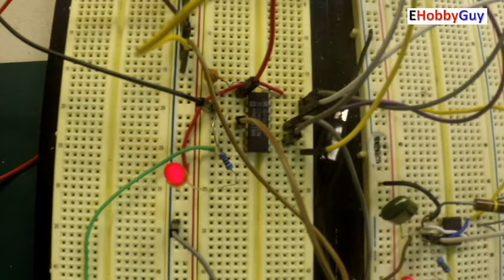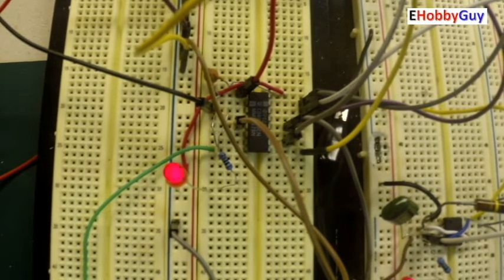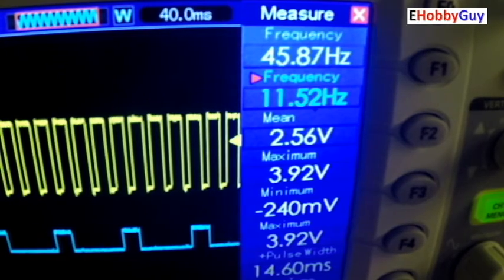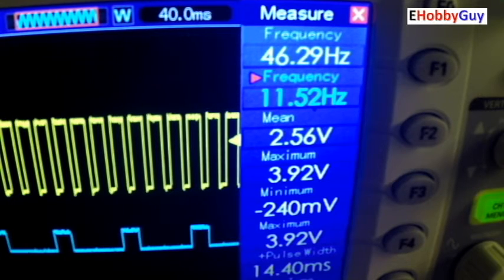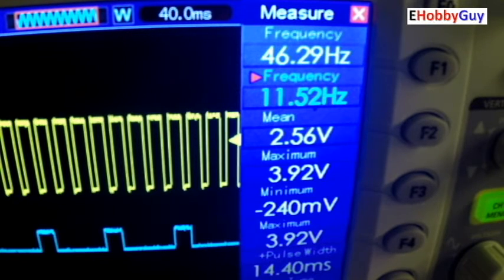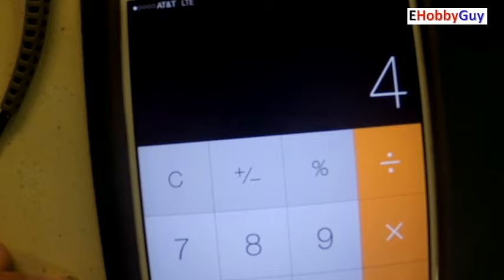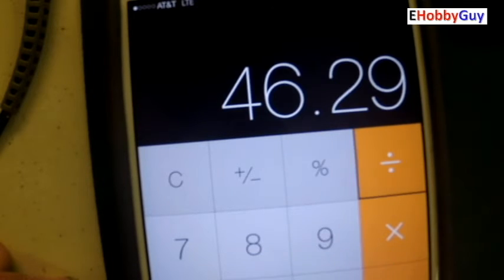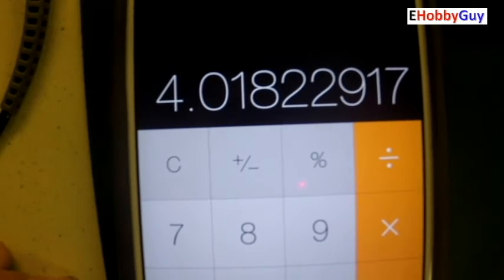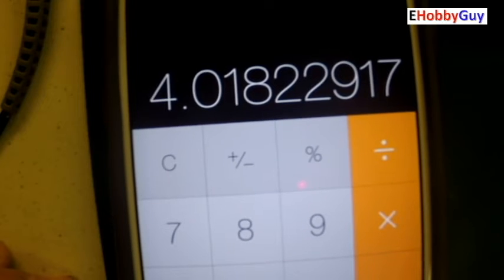All other outputs are tied to ground with jumpers. Let's take a look at the scope. We should now be dividing by 4. And of course there it is. The input frequency is fluctuating a little bit at 46.29 hertz. The output frequency is 11.52 hertz. There's some rounding error but now we are dividing the frequency by 4.